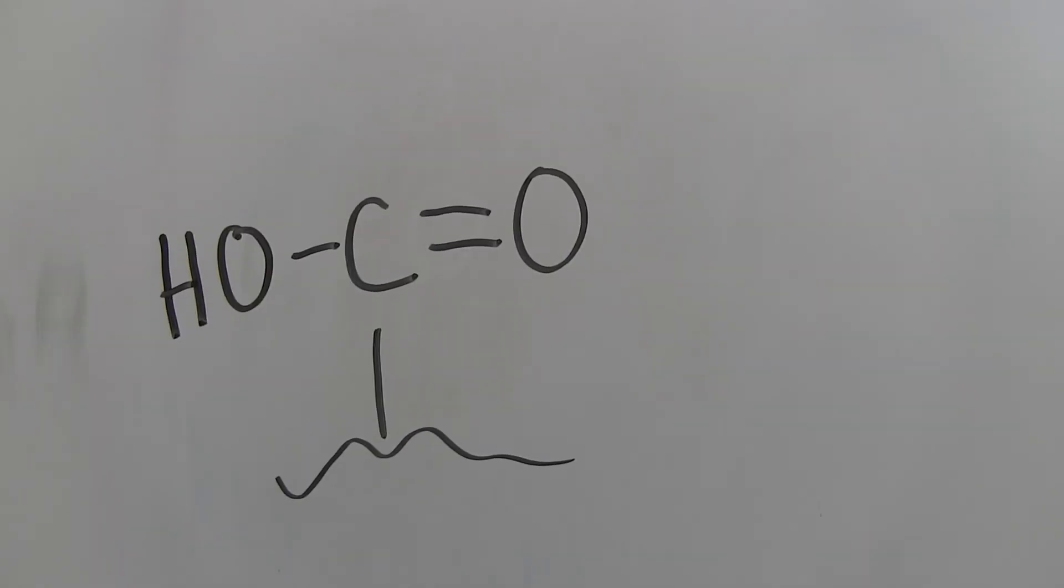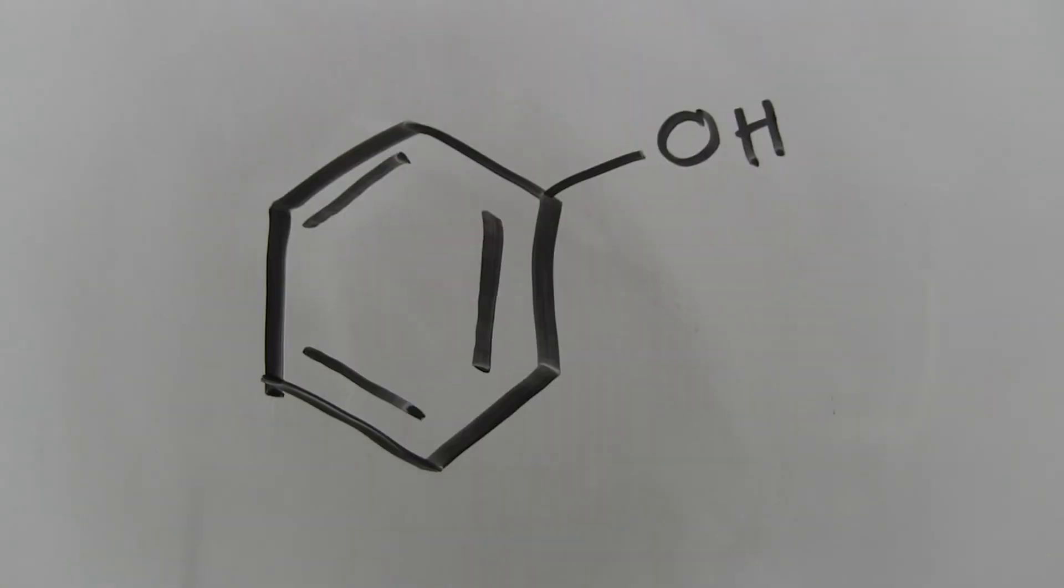If the OH group is attached to a carbonyl or a C=O group, then it is very easy to remove the proton using any base. However, if the OH group is attached to an area containing C=C bonds, it is much more difficult to remove the proton, and a stronger base must be used.